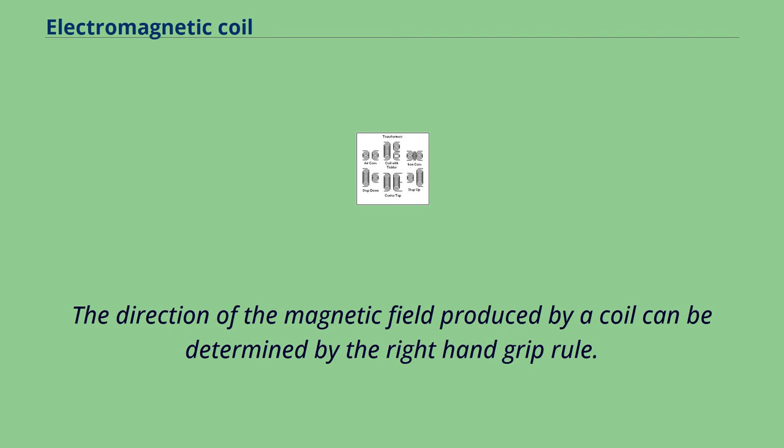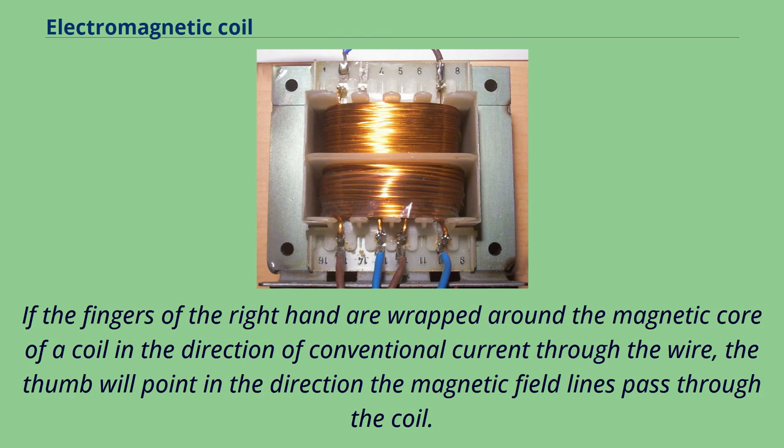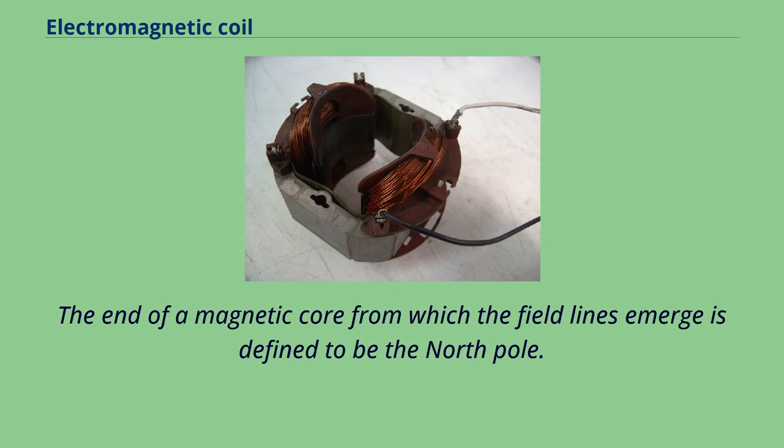The direction of the magnetic field produced by a coil can be determined by the right-hand grip rule. If the fingers of the right hand are wrapped around the magnetic core of a coil in the direction of conventional current through the wire, the thumb will point in the direction the magnetic field lines pass through the coil. The end of a magnetic core from which the field lines emerge is defined to be the north pole.